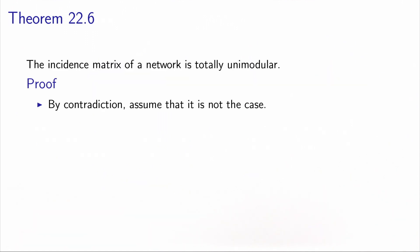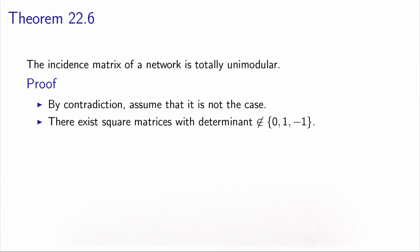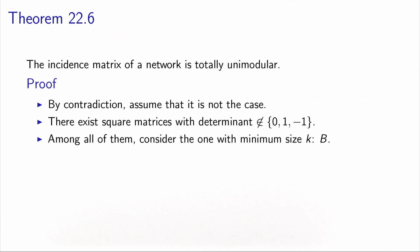What we would like to show is that this incidence matrix is totally unimodular, and we will do this by contradiction. So let's assume that it is not totally unimodular. It means that there is at least one square matrix with a determinant which is not 0, not 1, and not minus 1. Among all these square matrices, we will take the smallest one. Let's say its size is k, and we'll call it B.